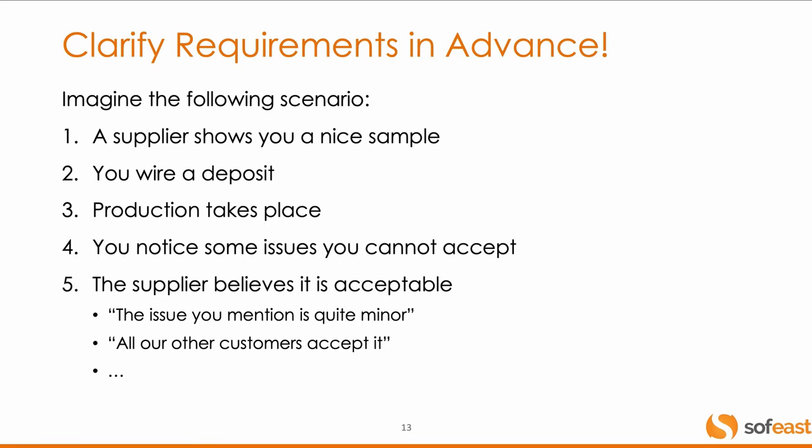Imagine the following scenario: you find a supplier with a nice sample, you say okay I'll give you an order, you wire the deposit, they make production, and then you notice some issues — hopefully before shipment, maybe after shipment. What are you going to tell them? They'll say: this issue we think is quite minor; all our other customers accept it; you did not tell us about it. And then what do you do? You can't negotiate anything. You are not in a position of strength because you never actually specified what you expected. This is really a rookie mistake you need to avoid.